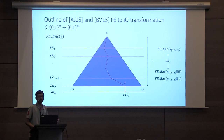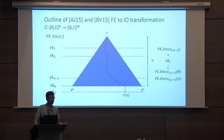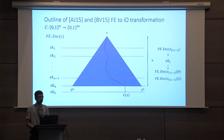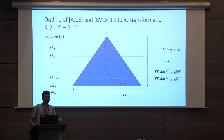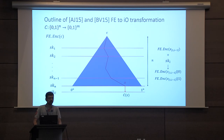To evaluate this obfuscation on a particular input x: take the ciphertext encrypting the root, decrypt it using the first secret key SK1, and get two encryptions — one encrypting bit 0 and the other bit 1. Depending on the first bit of your input, choose the corresponding encryption and recurse using the second secret key. After n decryptions you get a functional encryption encrypting your actual input x, and then you use the final functional secret key to obtain the output of the circuit on input x.